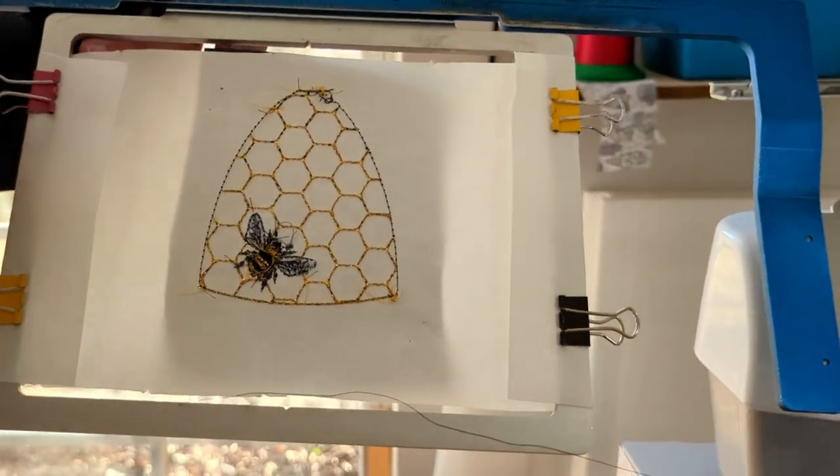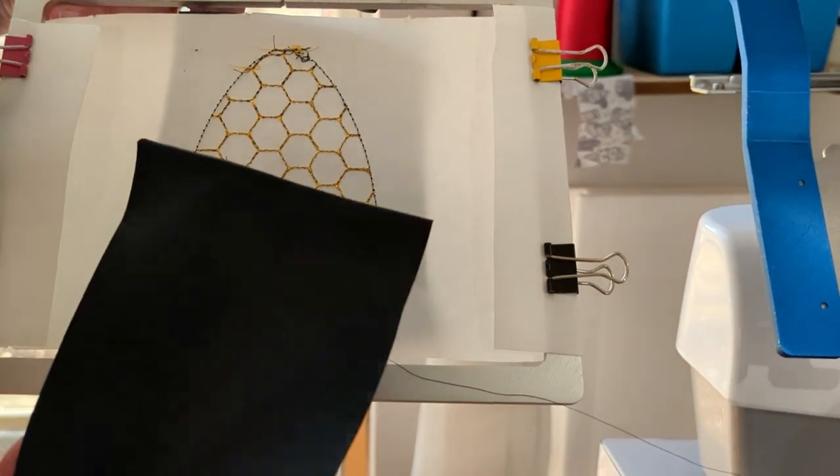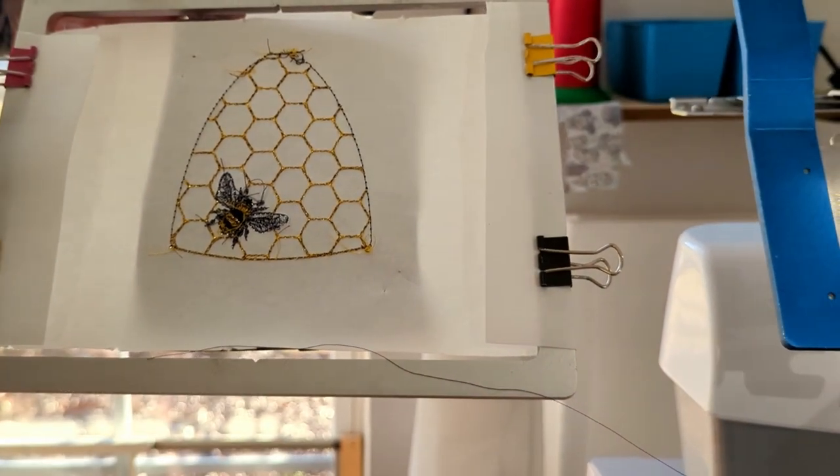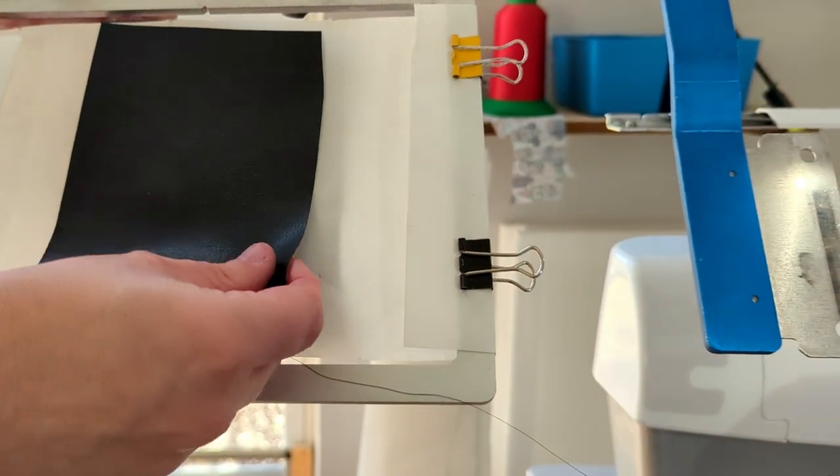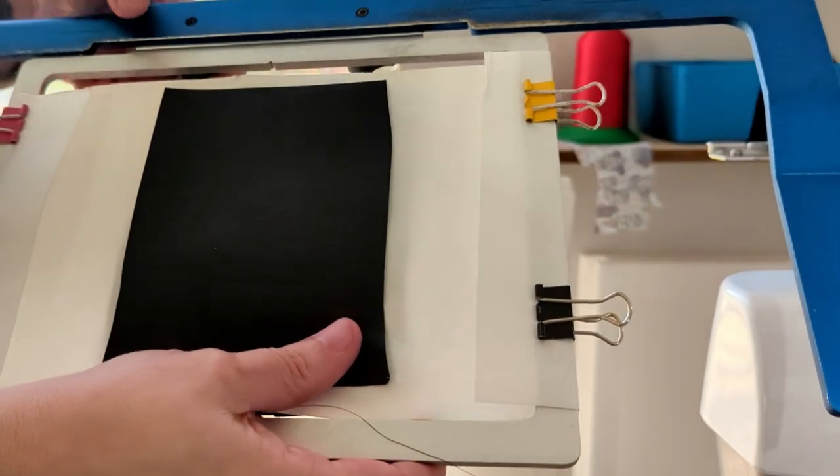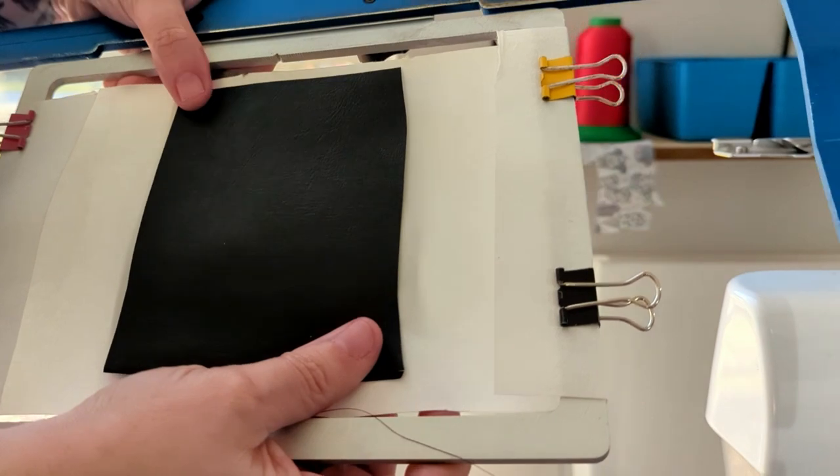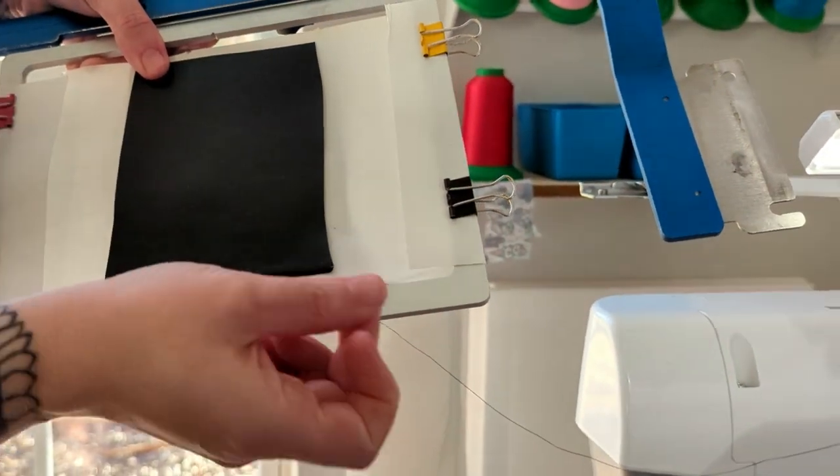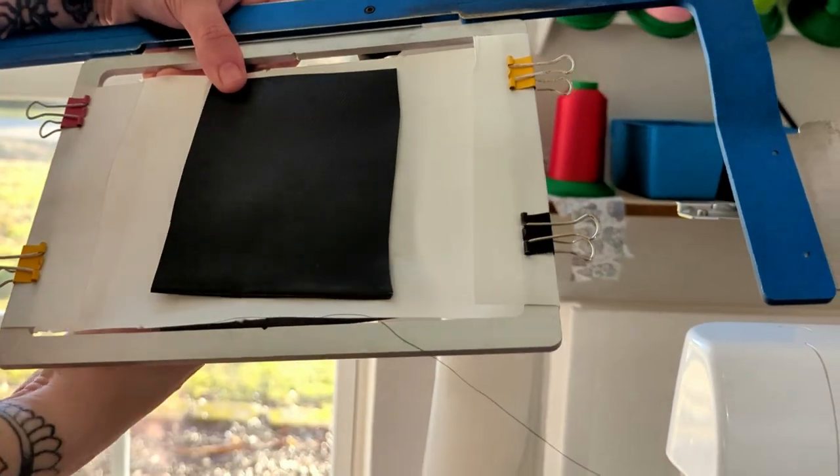You're going to grab your second piece of vinyl felt leather, whatever you're using. You're going to place it wrong side against your stabilizer to cover everything you've stitched so far. And you're going to tape this down or you can pin it. What I recommend if you're using pins is to pin from the front of your hoop. That way you don't have sharp pointies down here near the bobbin or the arm of your machine.